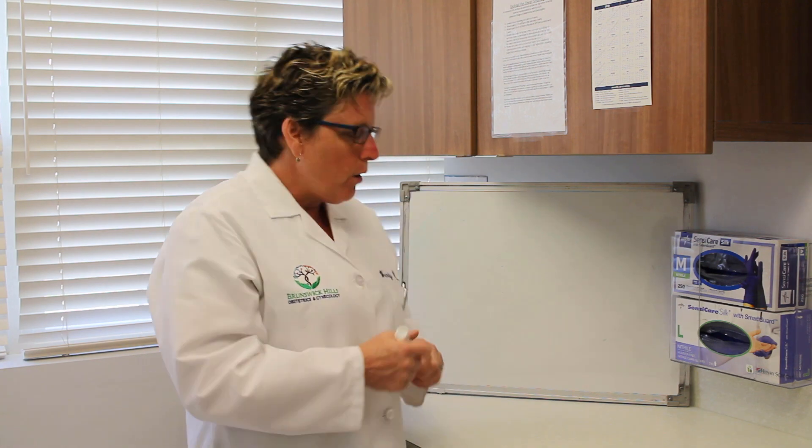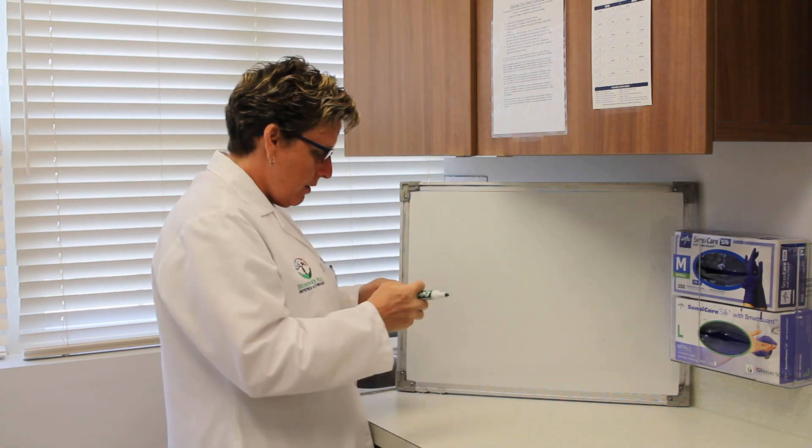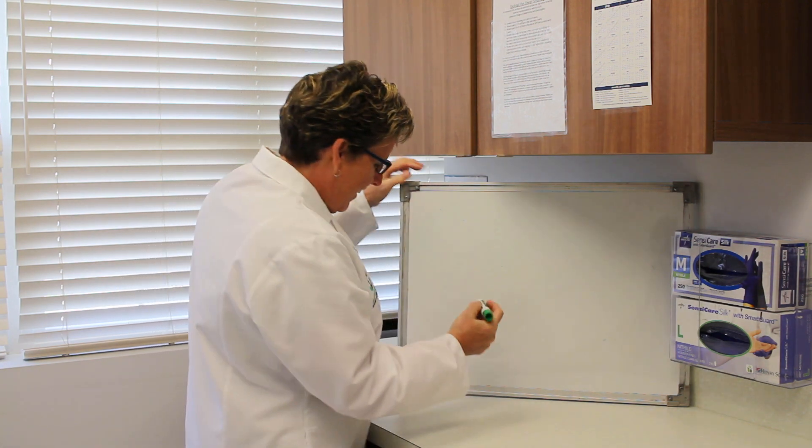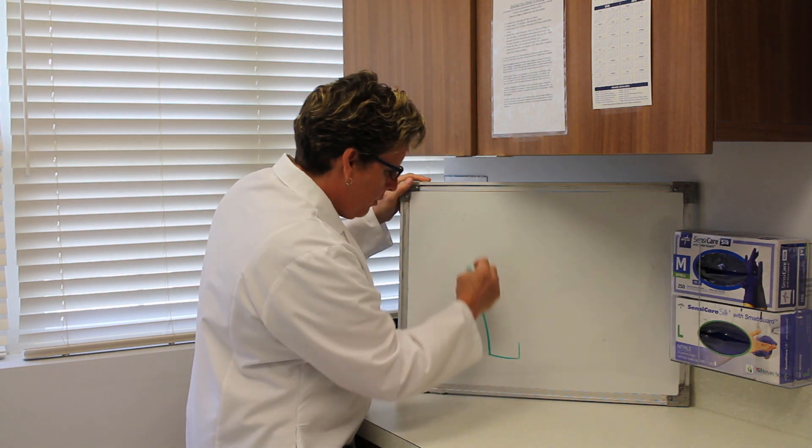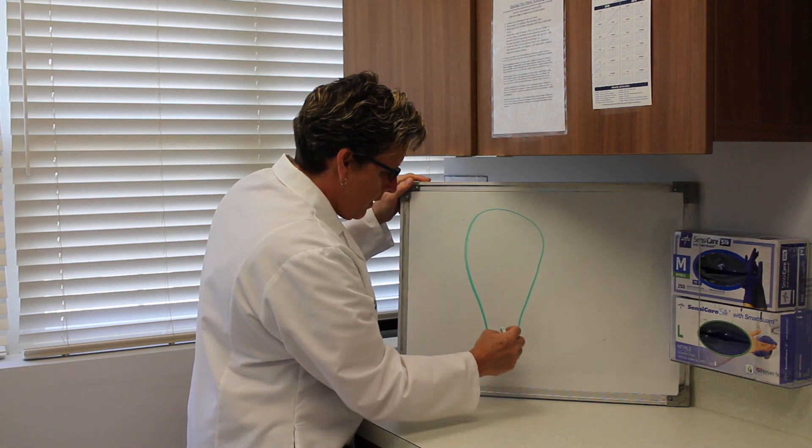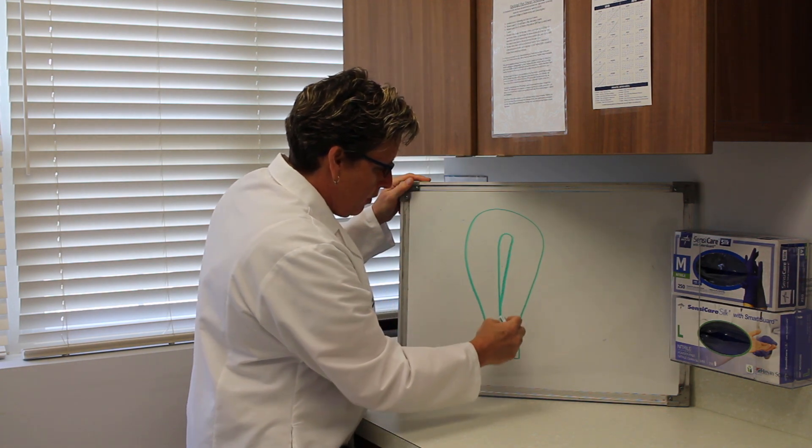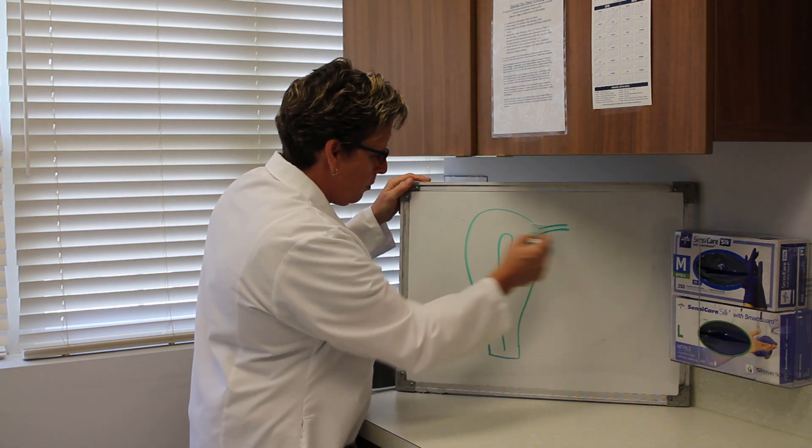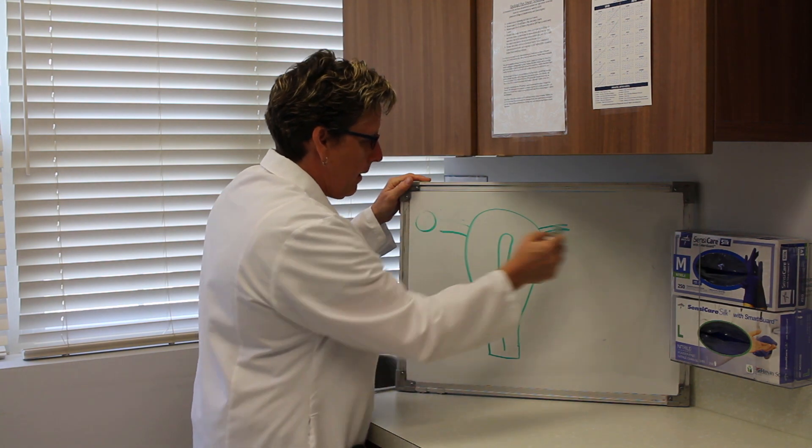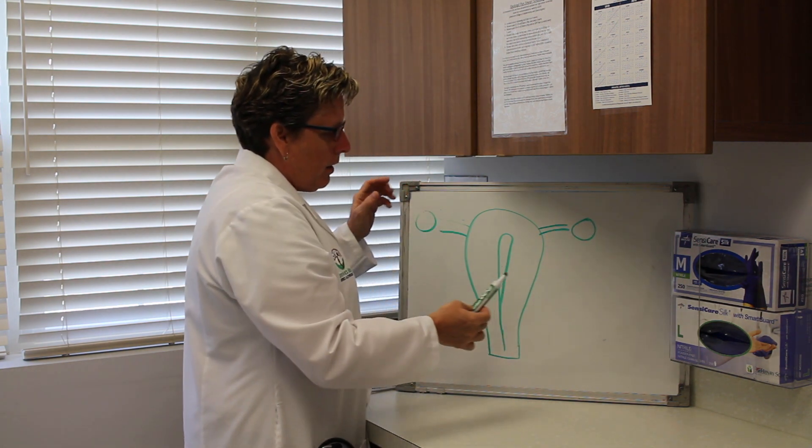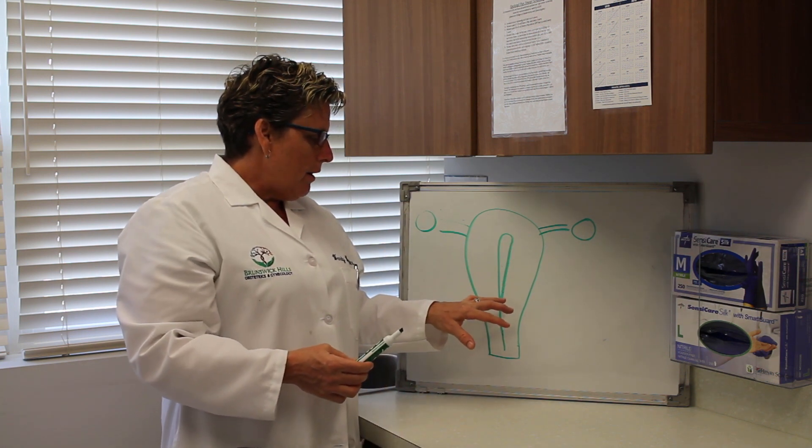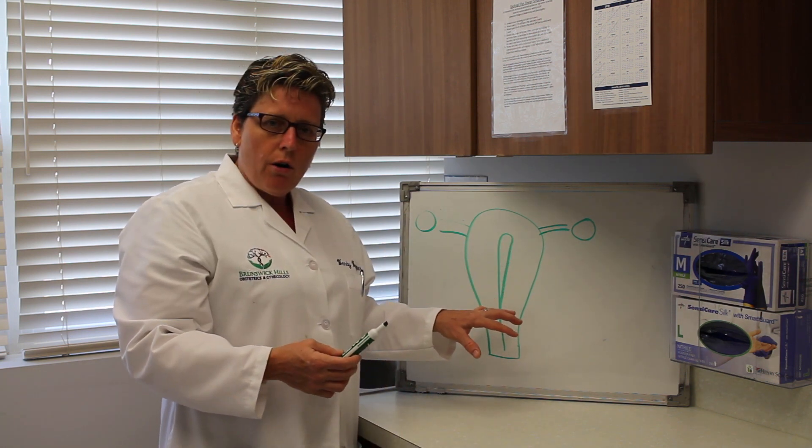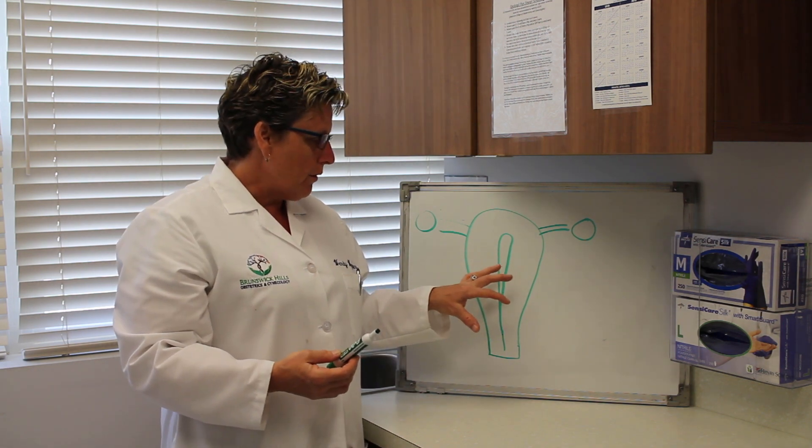Fibroids in general, benign tumors of the uterus. Excuse my art skills. So, if this is your uterus, this is the cervix, this is the lining of the uterus, so tubes would be here with ovaries. The uterus is made up of muscle and fibroids are growths of the muscular portion of the uterus.